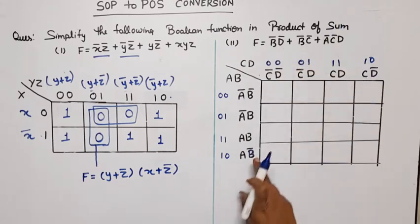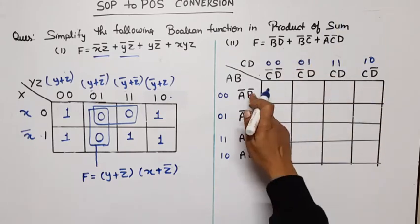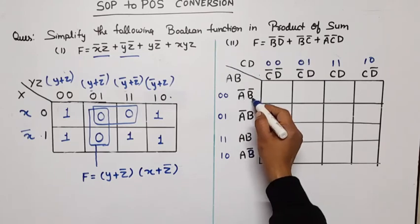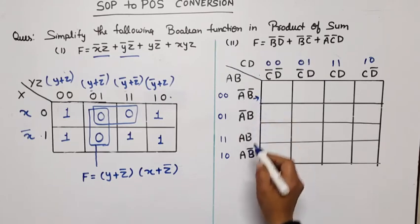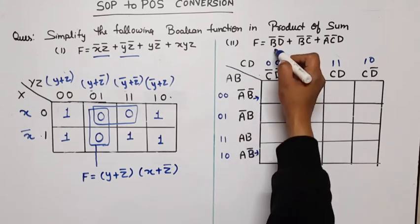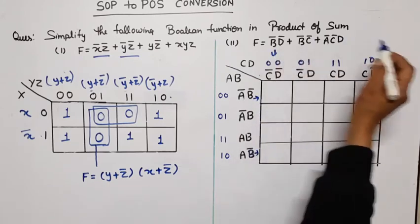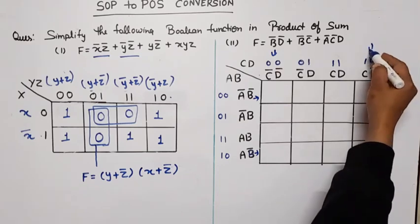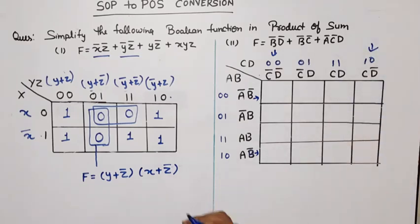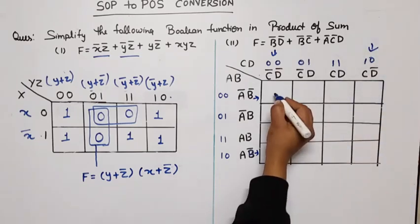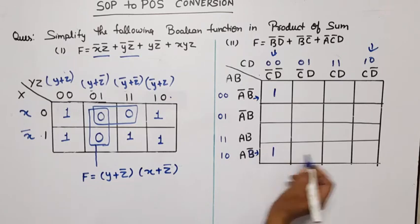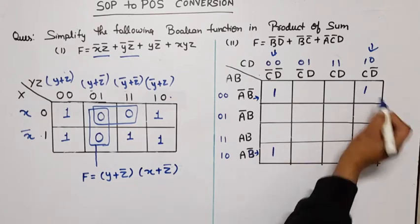The first term is b̄d̄: b̄ appears in the first and last rows, and d̄ appears in the first and last columns, so we place ones at those four intersection cells — top-left, top-right, bottom-left, bottom-right of the K-map.